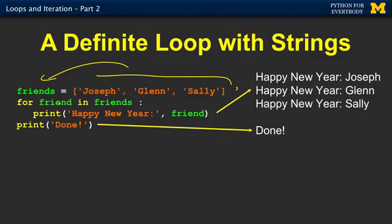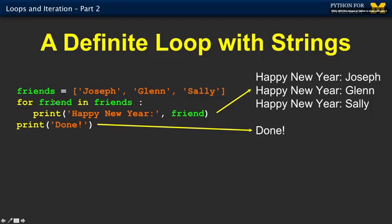And then I have this iteration variable friend that's going to go through each of the strings in friends. So that means that friend is going to go once Joseph, the next time it's going to run the loop again with Glenn, and the third time it's going to run the loop with Sally. And so it says Happy New Year Joseph, Happy New Year Glenn, Happy New Year Sally. So you know that this code is going to run three times, and friend is going to take on Joseph, Glenn, and Sally in successive iterations through the loop.